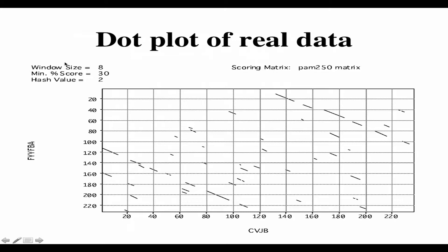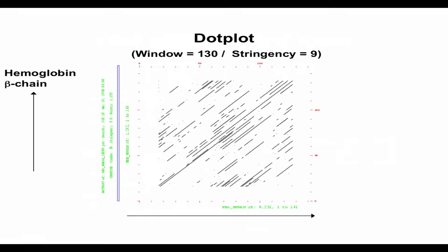Frequently we use windows with much lower percent identity, particularly with protein alignments. 30% identity is actually a relatively high amount of identity between two proteins in a window of size 8 or 10. 25% is kind of the cutoff often used for finding a reasonable amount of identity between two proteins that are inferred or hypothetically homologous. Often you get many lines — this would be the case for a sequence that's somewhat repeated. When you see these many parallel diagonals, that's a sure sign your sequence contains repeated regions.